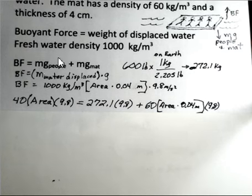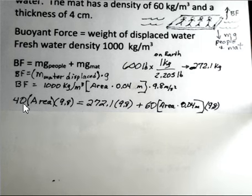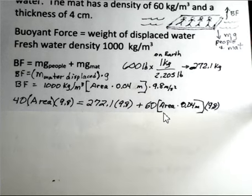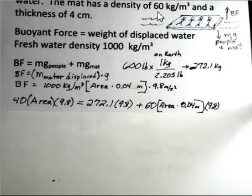Doing the calculation of 1,000 times 0.04 gives us a factor of 40. The area is still here and 9.8 is still here. Then the mass of the people, 272.1 kilograms, times 9.8. And the mat has a density of 60 kilograms per cubic meter, so we get 60, times the volume of the mat — area times 0.04 meters — and then another 9.8. Do you see a possible simplification at this point?